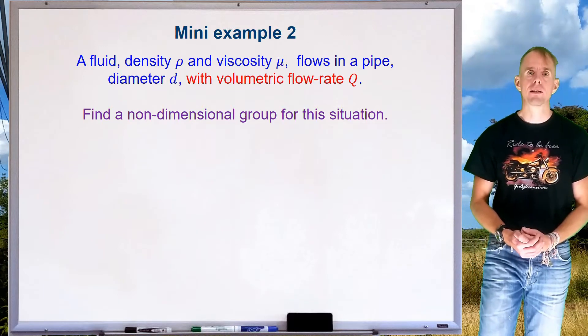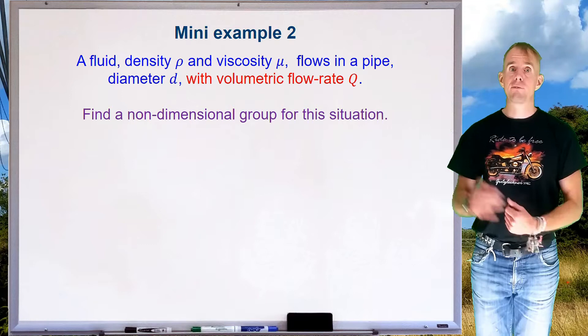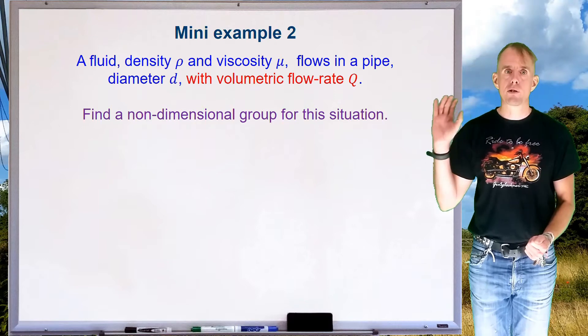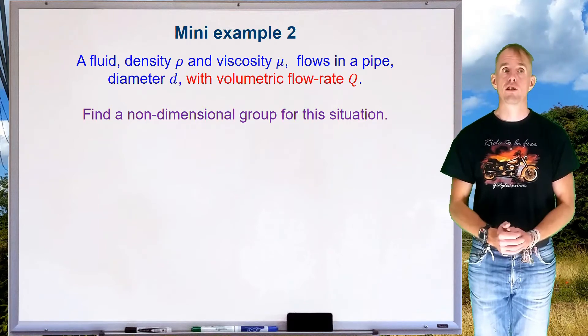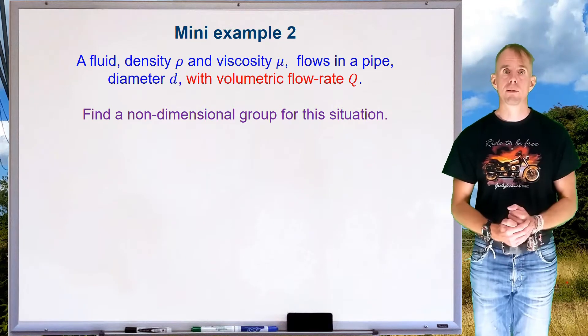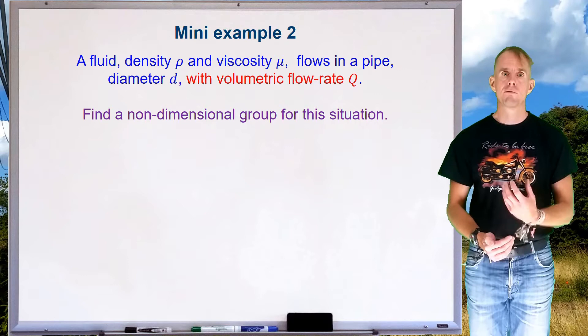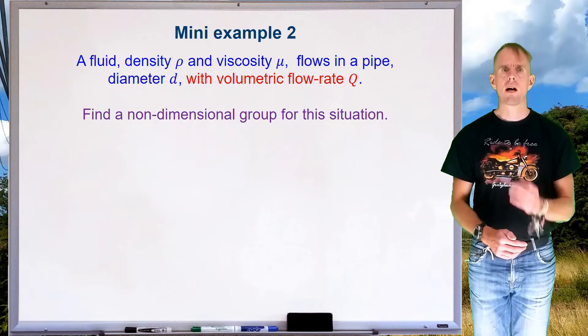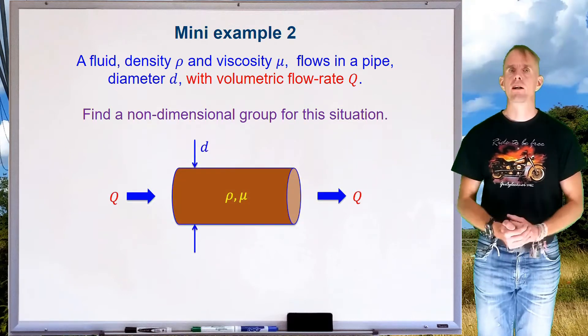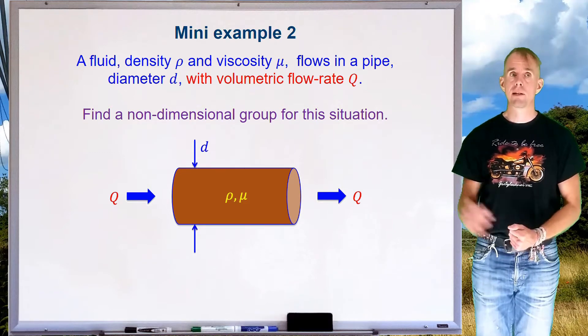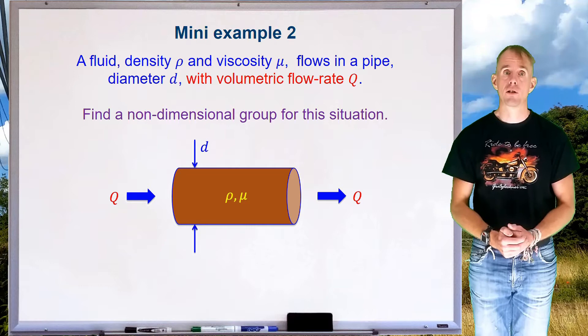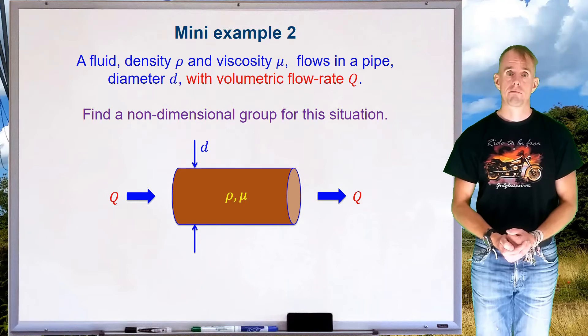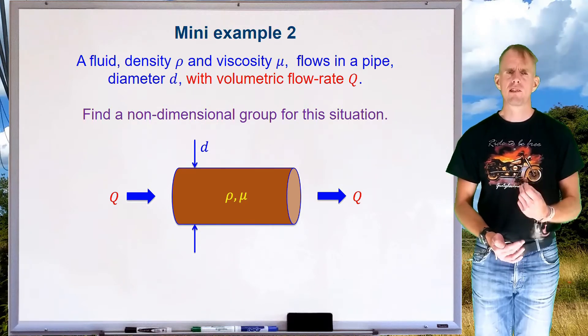Mini example number two is going to be along very similar lines. We still have our pipe. We still have our fluid flowing through our pipe. All that we've changed is the way in which we measure how much fluid. This time we have a volumetric flow rate Q. Now, before you dive into the problem and start thinking, well, Q, I need to find a dimensionless group involving Q, and look in your data book, and finding that the only Q there looks like a heat flux, I want you to think. Draw a diagram. There's a diagram of our problem. It's very similar to the last diagram, except we've just replaced u, the velocity, by Q, the volumetric flow rate. Ask yourself this. Has the physics changed? I hope that you will think that, no, actually, the physics hasn't changed.